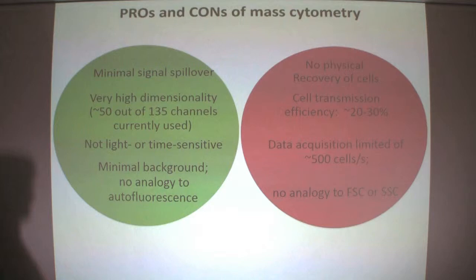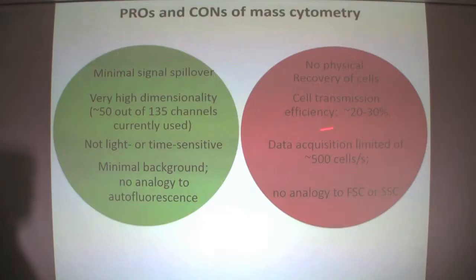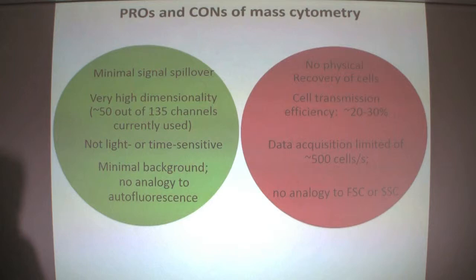The drawbacks are also significant. There is no physical recovery of cells because they are burnt. We have limited cell transmission efficiency — compared to flow cytometry we lose somewhat more cells during processing — and the data acquisition rate is still limited. We have to carefully plan how to design a mass cytometry experiment in order to make it successful and economical. We also have to make sure that all the cells we want to see are labeled with at least a minimum amount of metal.